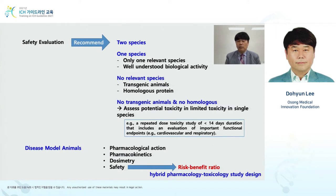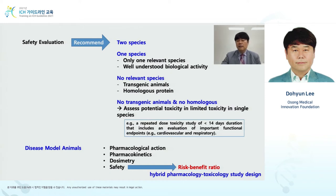A repeated dose toxicity study of less than 14 days duration that includes evaluation of important functional endpoints — such as cardiovascular and respiratory systems — is a limited toxicity approach for major organs. With the development of animal test methodologies, there are a variety of disease model animals. Apart from pharmacological action, unexpected actions must be assessed. Disease model animal assessment can be applied for risk-benefit ratio, and a hybrid pharmacology and toxicology study design is emerging, using disease model animals to look at pharmacology and toxicology simultaneously.